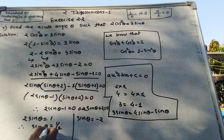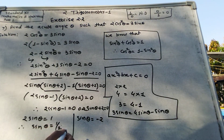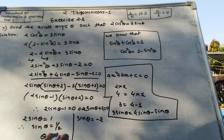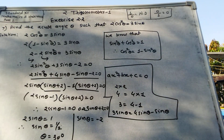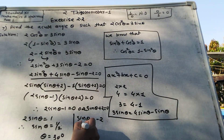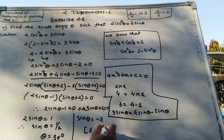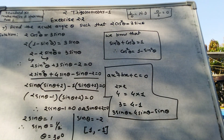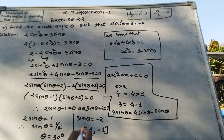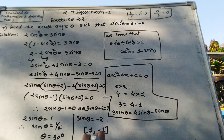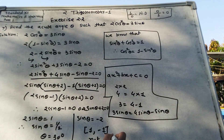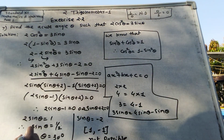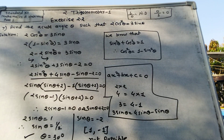When sin theta equals 1/2, the angle theta is 30 degrees. The value sin theta equals negative 2 is not a permissible value for sin theta since sine must be between -1 and 1, so it is not possible.